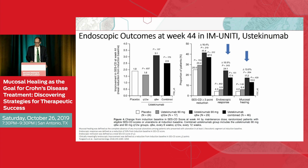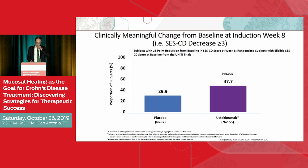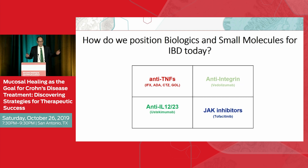The ustekinumab data also showed a decrease in certain scores that was significant compared to placebo. So one of the questions becomes: how do we position all of these agents? The three approved for Crohn's are the anti-TNFs, the anti-integrin, and anti-IL-12/23. I'm not going to touch on JAK inhibitors for Crohn's — specifically tofacitinib, which did not show benefit in the Crohn's study — but stay tuned, as selective JAK inhibitors will be evaluated in the future.